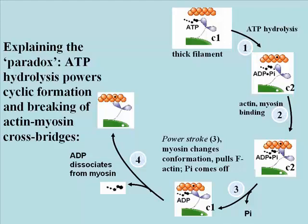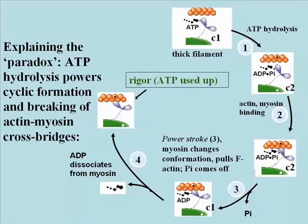Now you're looking at the far left of this cycle, at the equivalent of rigor. The ADP has been hydrolyzed, and in a person who has passed away, ATP eventually gets used up, and what you're left with is myosin heads permanently bound to actin. That's rigor mortis.